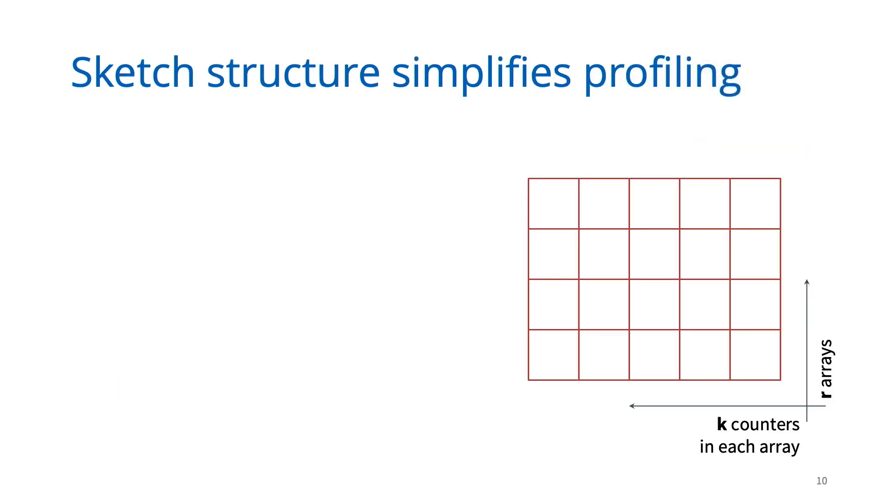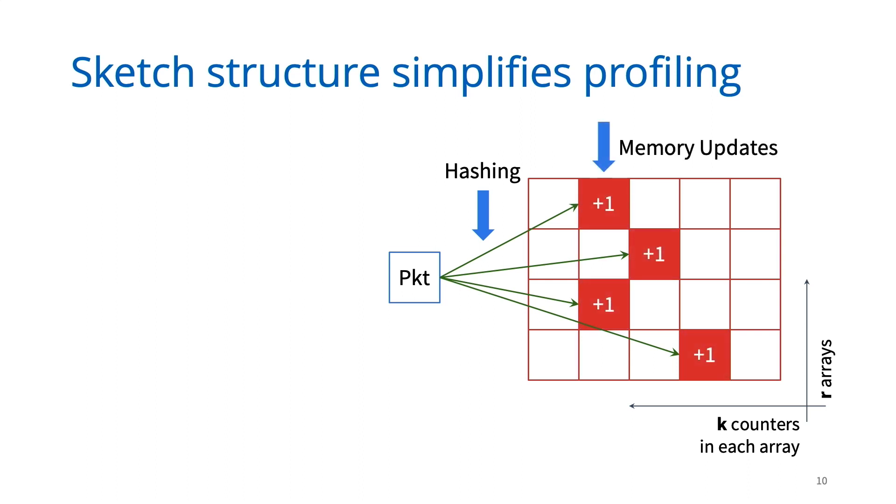To understand this, I'll briefly describe the structure of a canonical count-min sketch, which can be used to store a summary of flow sizes of a traffic stream. It consists of a table of counters, and on every packet, a hash function is computed for each row in the table. Using the output of the hash, the output of the hash is used to index into the different rows of the table, and the corresponding counters are incremented.